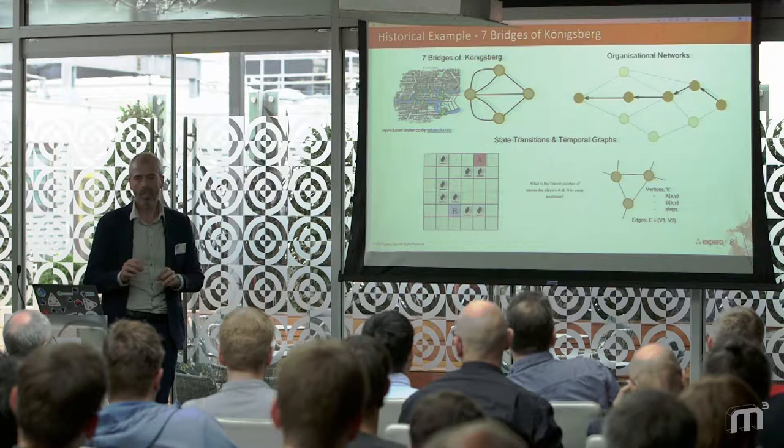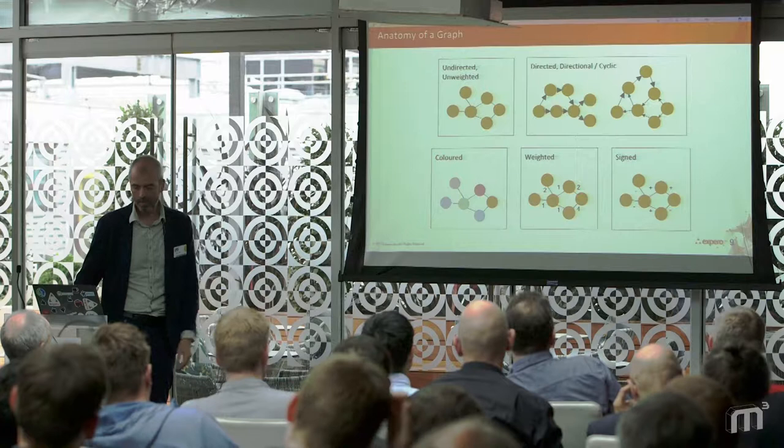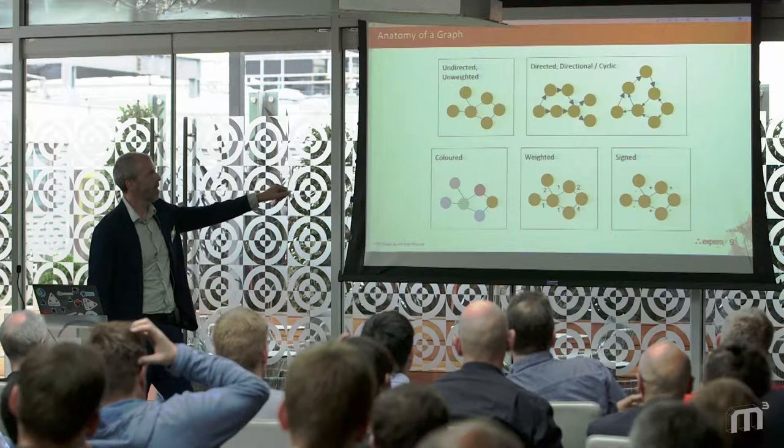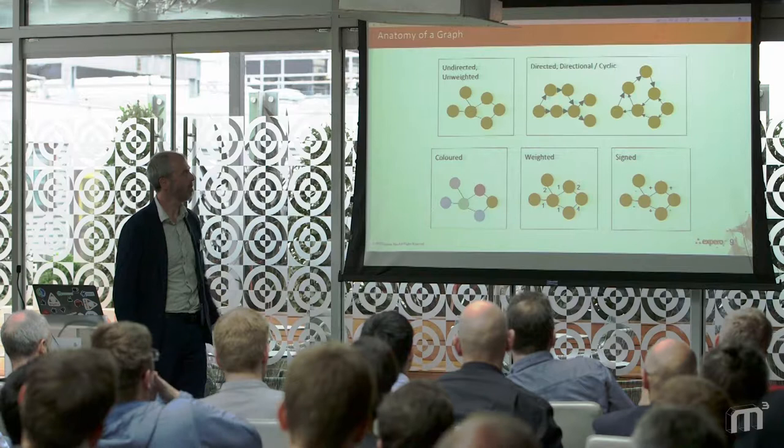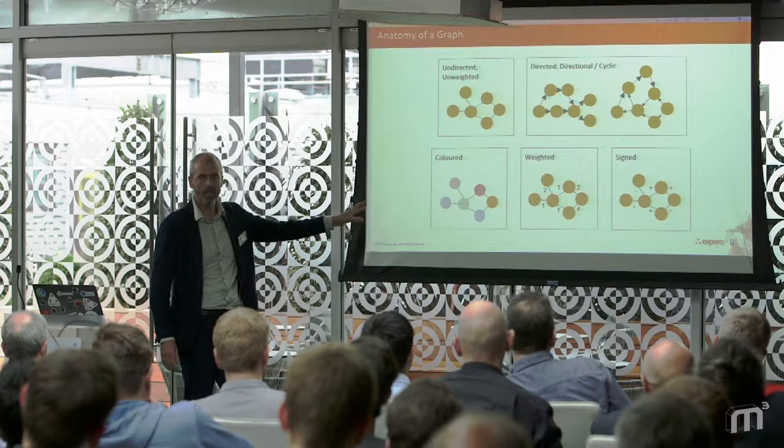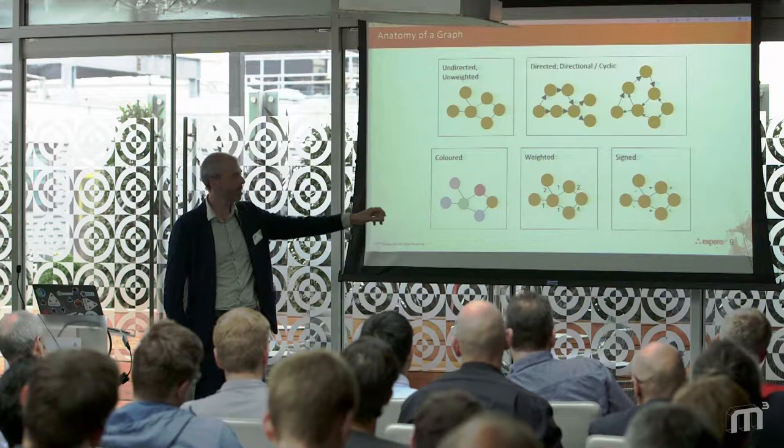There are various types of graphs. You can have undirected, unweighted, which is the easiest to deal with. They can be directed, so edges can only point one way. They can be acyclic or cyclical and have loops. They can be coloured, which means a vertex can have a property. They can be weighted, so edges can also have a property of some type. And a reduced form of that is they could be signed, where edges can be positive or negative.